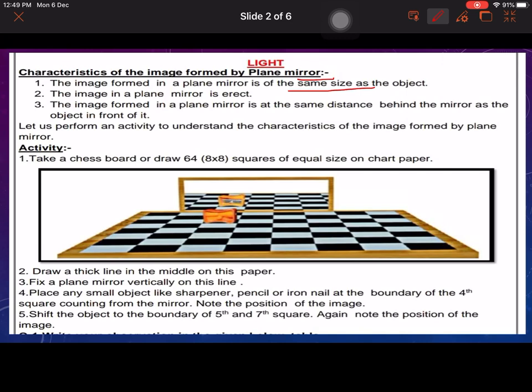You can see there is a chess board which is 64 squares. Draw a thick line in the middle of this paper. Fix a plane mirror vertically on this line. This is what we have put in it.